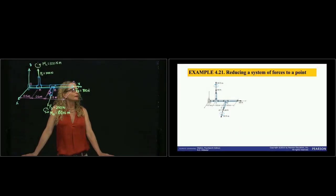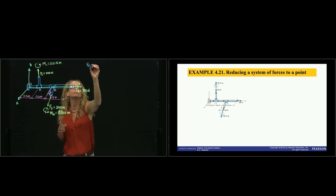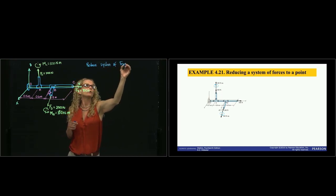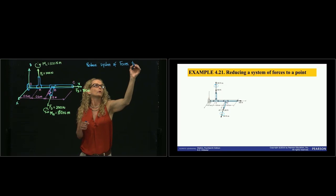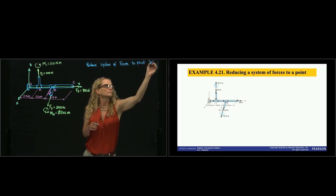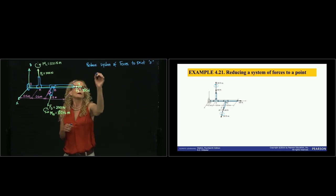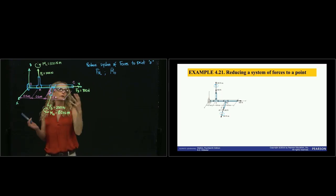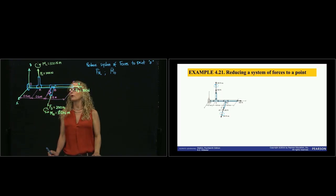Hi. Here we are solving problem 421, and we are asked to reduce the system of forces and moments to point O. So that means finding the resultant force and the resultant moment. And we will do this vectorially because this is a 3D problem.